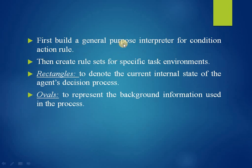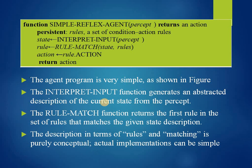As described earlier, we first build a general-purpose interpreter for condition-action rules and then create rule sets for specific task environments. Rectangles denote the current internal state of the agent's decision process; ovals represent background information. The interpret-input function generates an abstract description of the current state from the percept, and a rule-match function returns the first rule in the set of rules that matches the given state description. The decisions in terms of rules and matching are purely conceptual, and actual implementations are also simple.